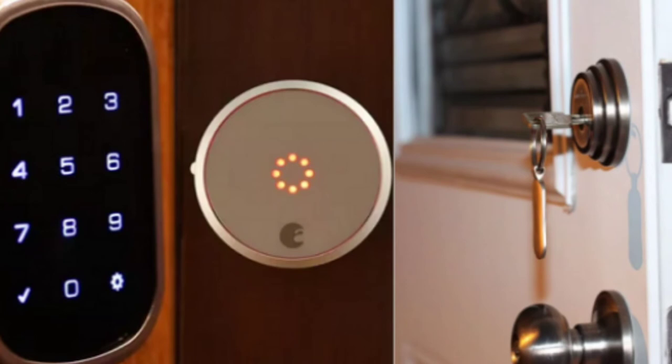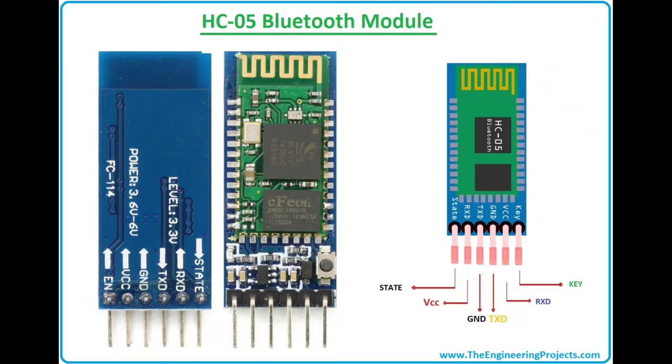HC-05 uses Frequency Hopping Spread Spectrum (FHSS) radio technology to send data over the air. FHSS provides certain advantages, for instance it provides very secure communication. We won't go into full detail on FHSS as it may take us away from the main topic. HC-05 also uses serial communication to communicate with devices or microcontrollers.